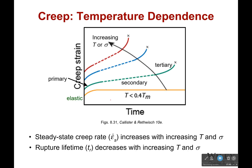Creep is very temperature dependent. The hotter it is, or the higher the stress, the more creep strain you're going to get. At a fairly low temperature, it's going to take a long time before it gets to failure, if at all. As you increase the temperature or increase the stress, there's a finite amount of time before it finally fails, and each time the strain increases. Temperature gives mobility — it lets those atoms move out of the way more easily.